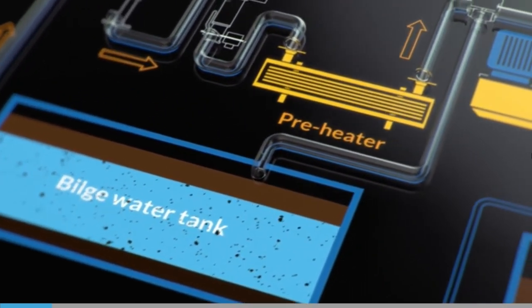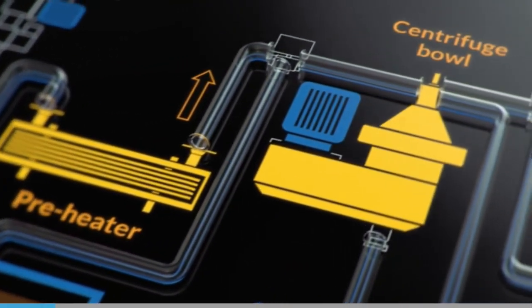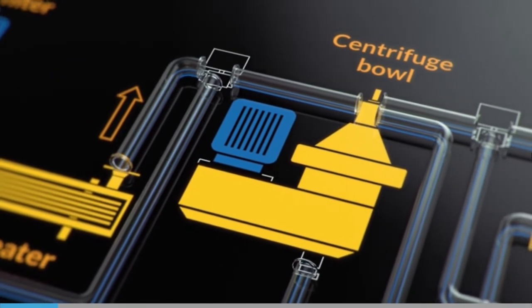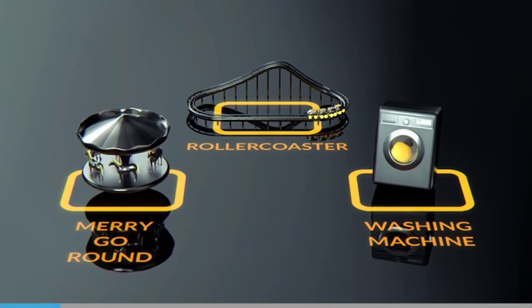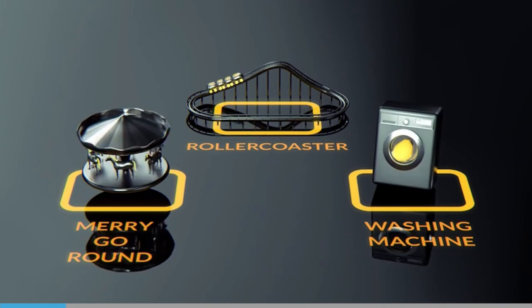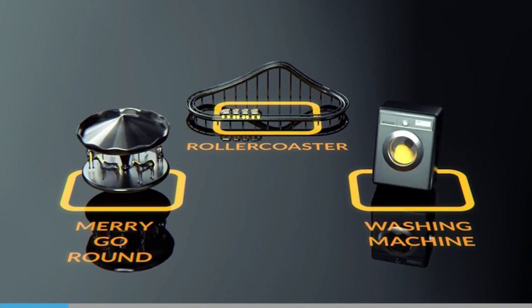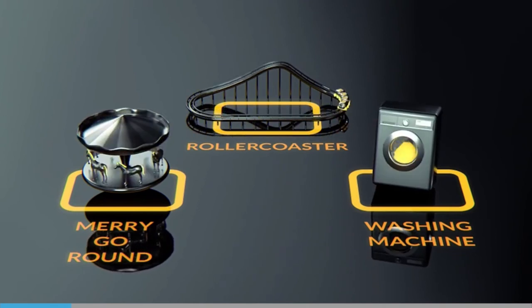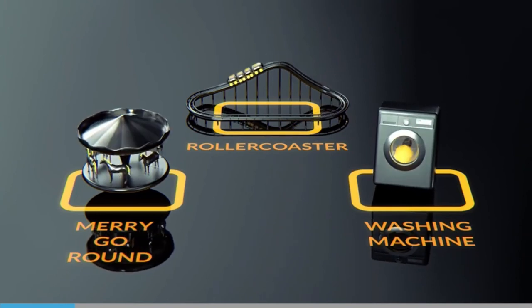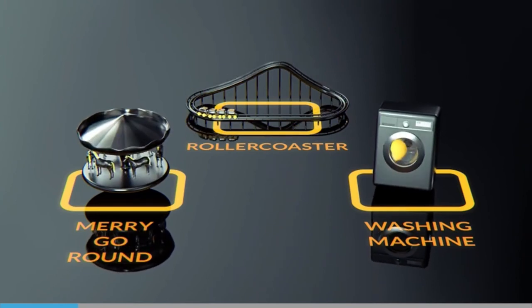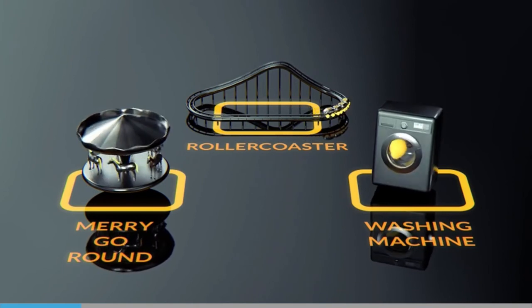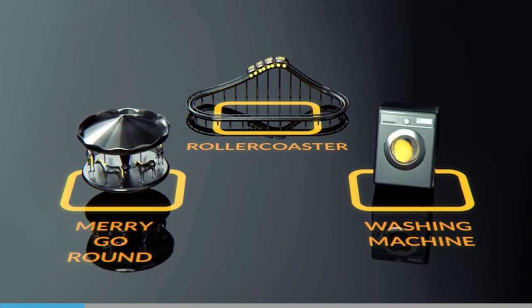Do you know which force is present on a merry-go-round, a roller coaster and a washing machine? That's right, a centrifugal force. The outward force on a body moving in a curved path around another body. Go through the chapter to learn more.